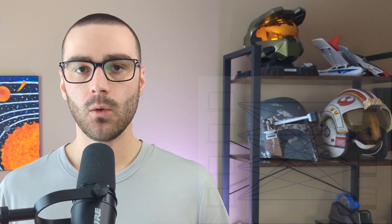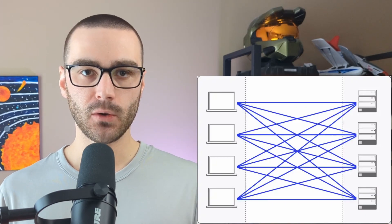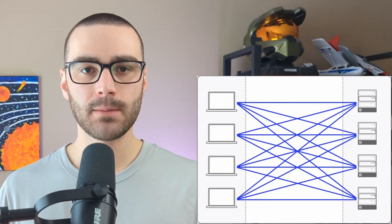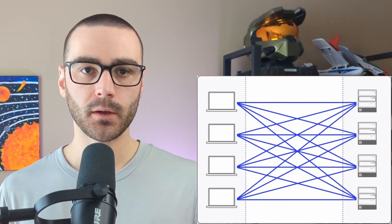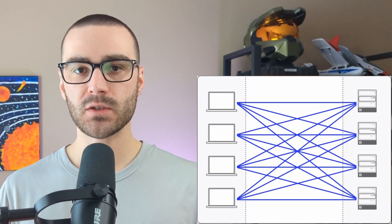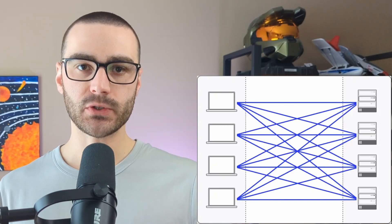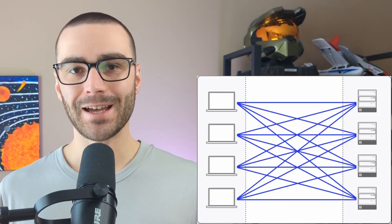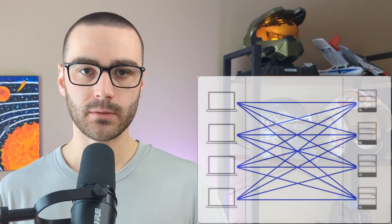Now that we understand the traditional VPN architecture, let's take a look at TwinGate's architecture. What if instead of placing a POP in various geographic locations, we place the POP on every node in the network, including client and resource nodes? This type of network is a peer-to-peer network where clients are directly connected to the resources that they need to access. TwinGate is a platform that supports this highly distributed network architecture.